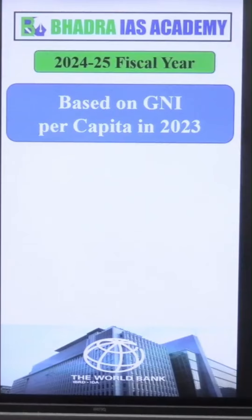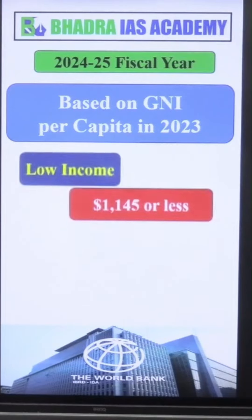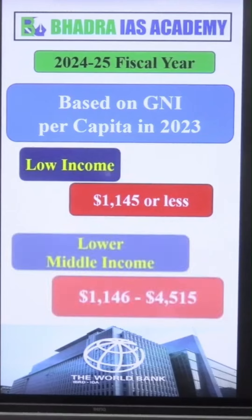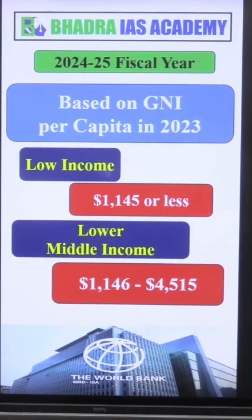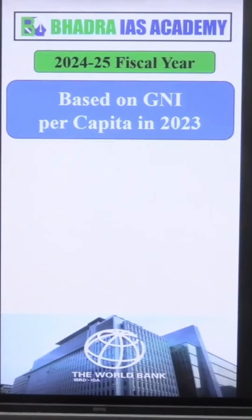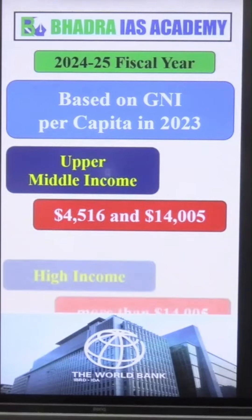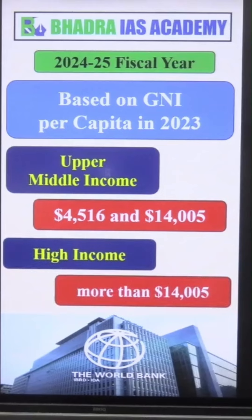Based on this, for the current year: the low income group is the fourth category where income is up to $1145. Then lower middle income is $1146 to $4515. Then upper middle income is $4516 to $14,000. Then high income — those countries with $14,000 and above.